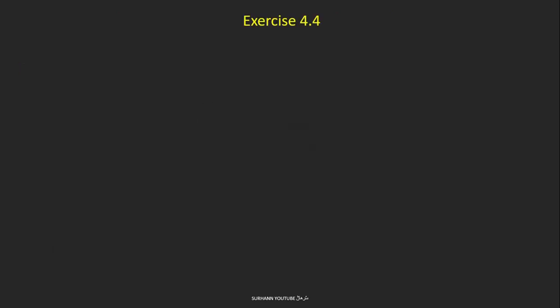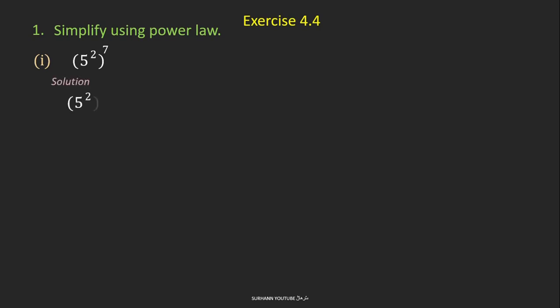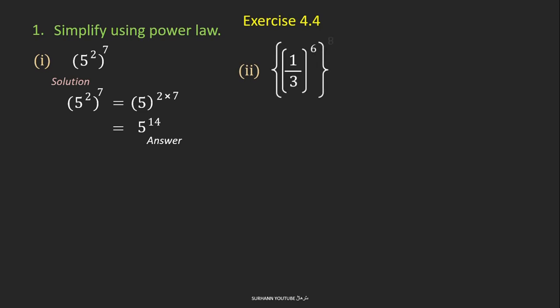Now let us start Exercise 4.4, which says to simplify by using the power law. Problem number 1: 5 to the power 4, and that whole to the power 7. According to the power law, we multiply the powers: 4 multiplied by 7 gives 28, so the answer is 5 to the power 28. Similarly, for problem number 2, just multiply 6 and 8 to get the answer 48.